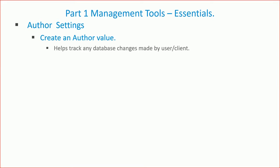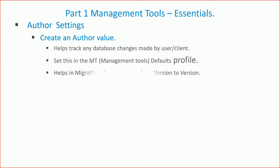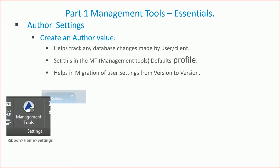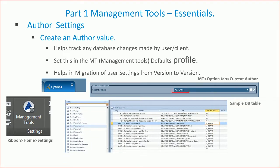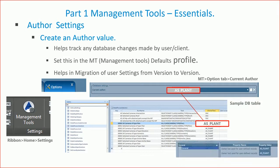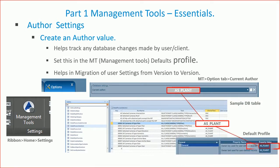An example is the author — you can create and set it in the management tools, and create a management tools default profile. These help when migrating from one version to another. If you've got an author value and a management tool profile, you can copy them across. I was working on a plant project and created something specific — I added some camera types for them to work in Advanced Steel, and used that to create all the drawing outputs from the system, linking to particular drawing styles and templates.